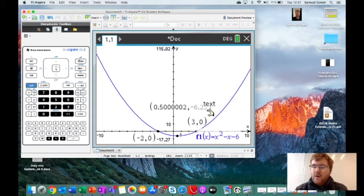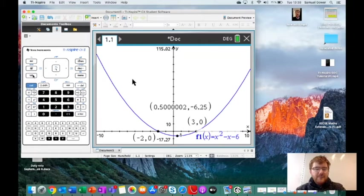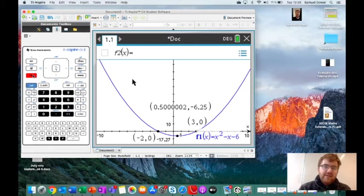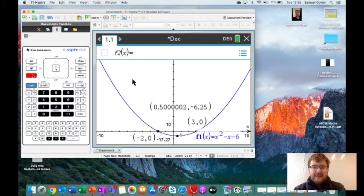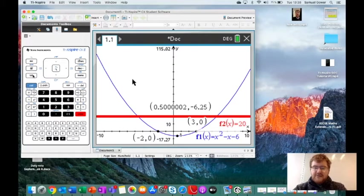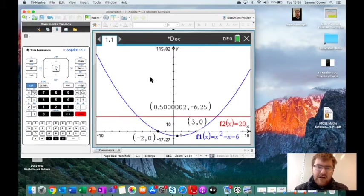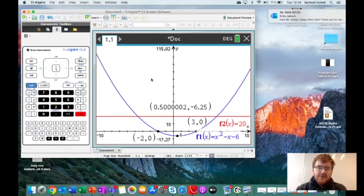Our next useful function is using this to solve equations. If you press the tab button over here, you'll be able to put in another function. I'm going to draw in the line—what should I choose? 20. You'll see you get a straight line in a different color for your second function.